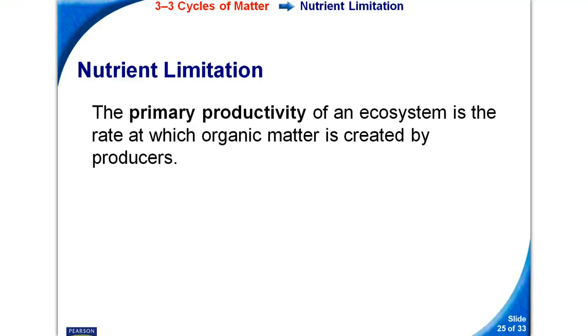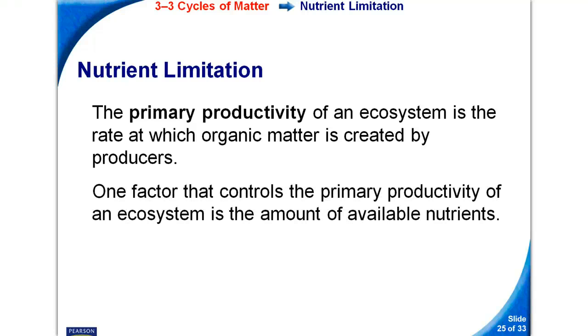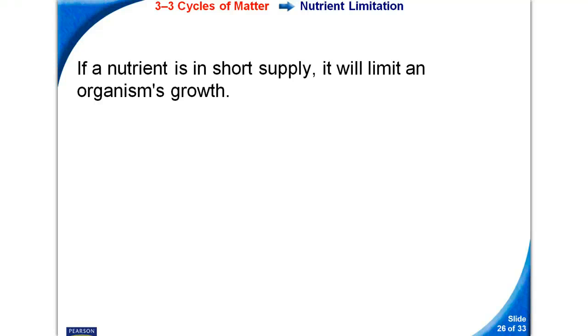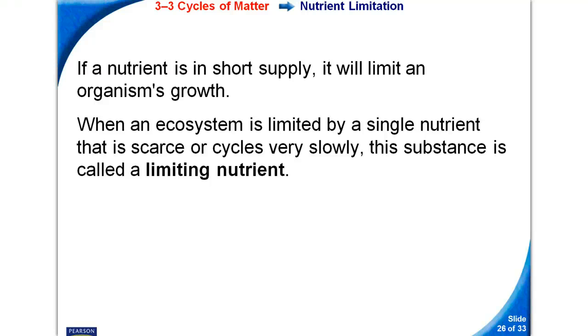Nutrient limitation. The primary productivity of an ecosystem is the rate at which organic matter is created by producers. One factor that controls the primary productivity of an ecosystem is the amount of available nutrients. If a nutrient is in short supply, it will limit an organism's growth. When an ecosystem is limited by a single nutrient that is scarce or cycles very slowly, this substance is called a limiting nutrient.